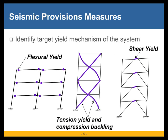The first step is to identify the target yield mechanism of the system. For example, you'll get flexural yield in the beams of a moment frame just outside of the connection. You can get tension yield and compression buckling in a concentrically braced frame, or shear yield or a combination of shear and flexural yield in the links in an eccentrically braced frame.